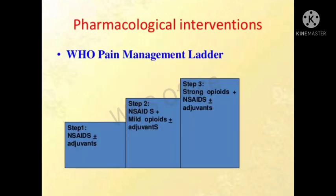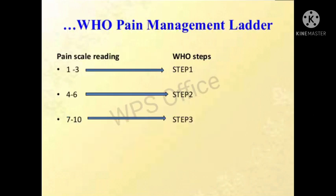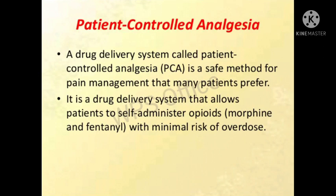This is the WHO pain management ladder, which has three steps. According to the intensity of pain — if the patient is at levels 1 to 3, it follows step 1; if the patient is at levels 4 to 6, it follows step 2; and likewise step 3.